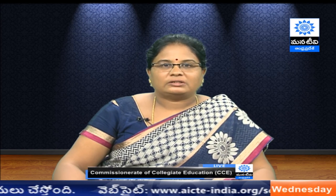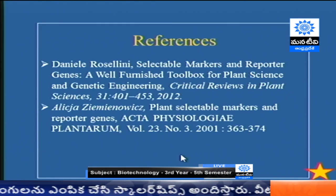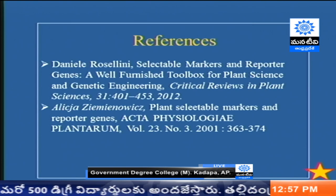In this session, we have discussed what are the selectable markers — NPT2 and HPT — and what are the reporter genes: CAT (chloramphenicol acetyltransferase), beta-glucuronidase (GUS), luciferase, and green fluorescent protein (GFP). NPT2, which gives resistance to kanamycin as neomycin phosphotransferase, acts as both a selectable and reporter gene. Thank you.